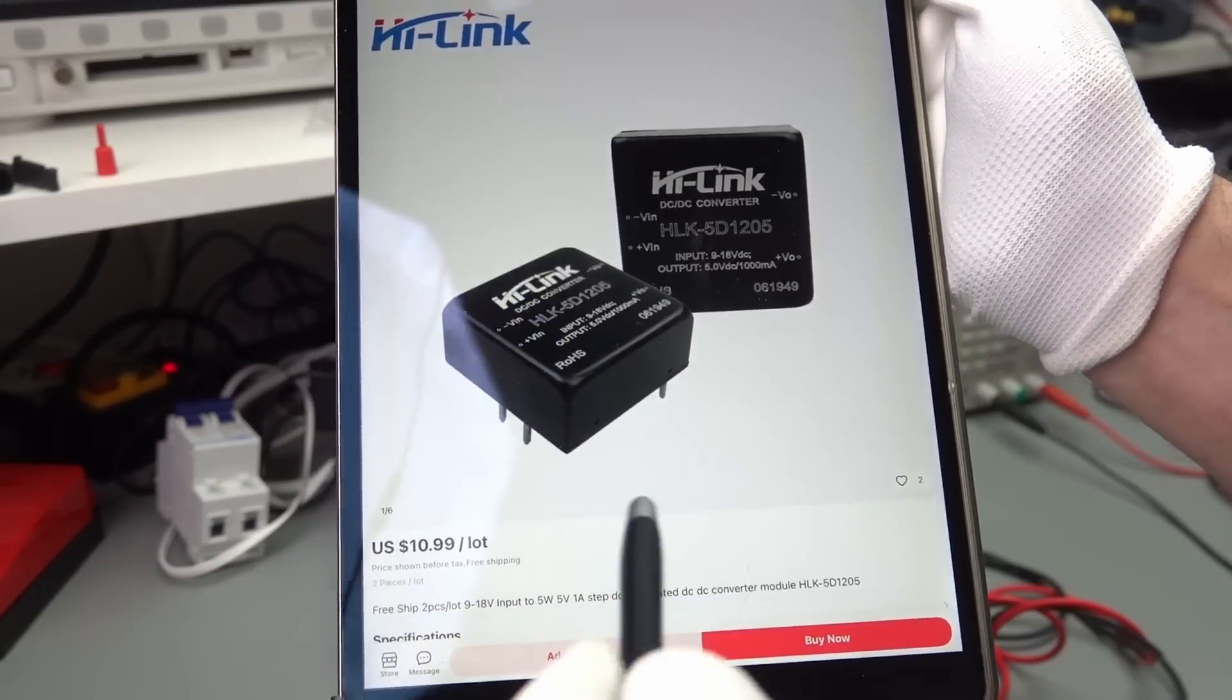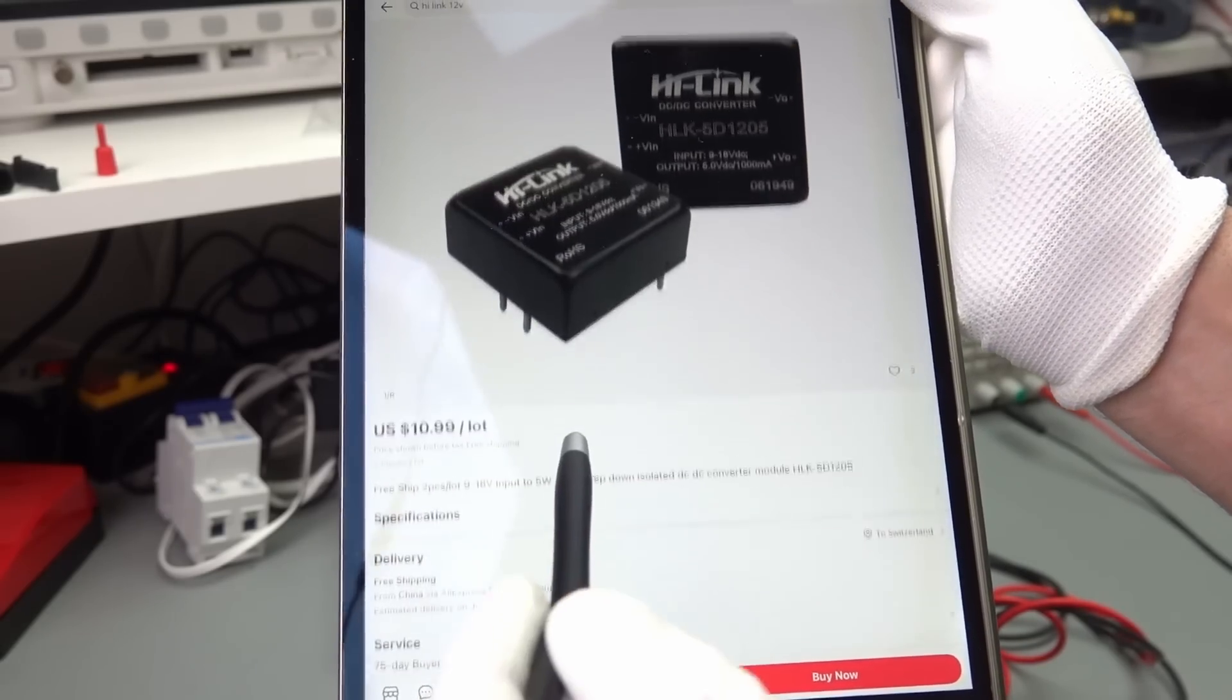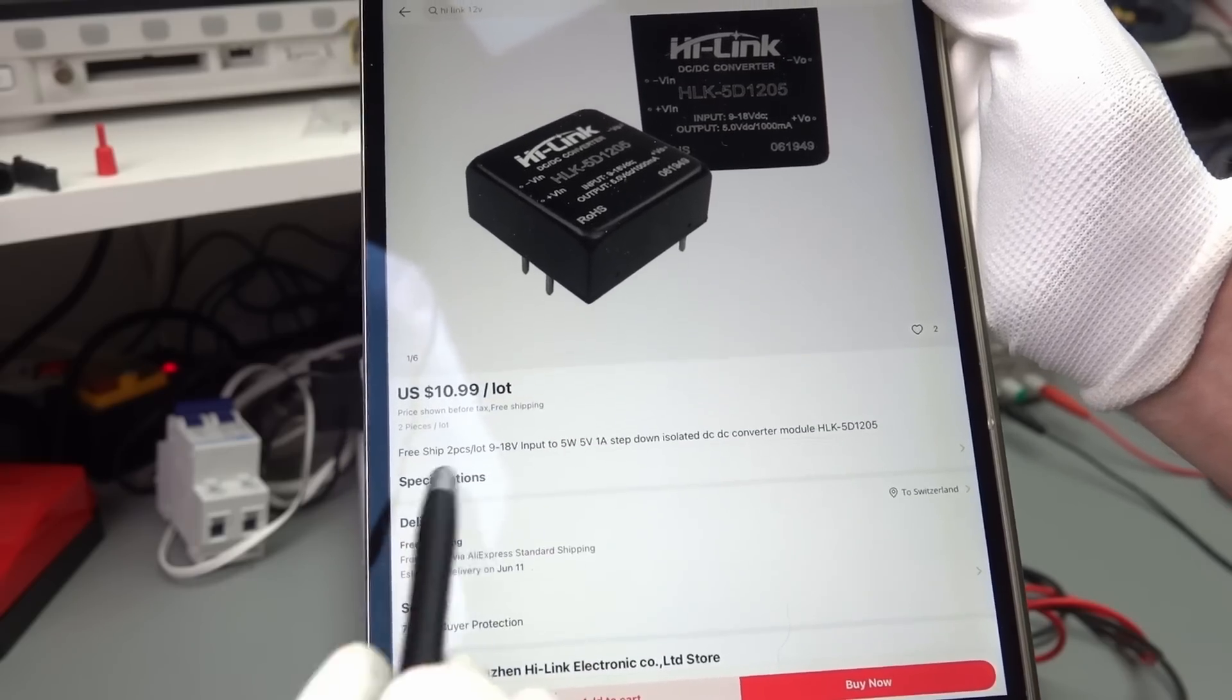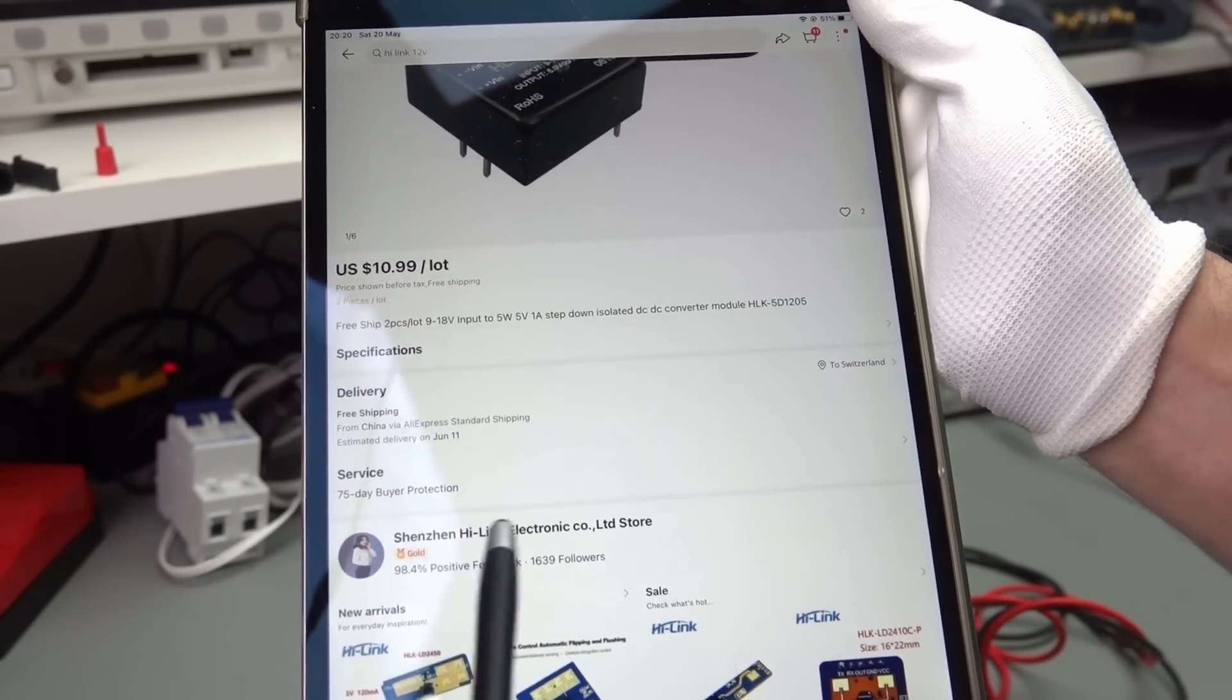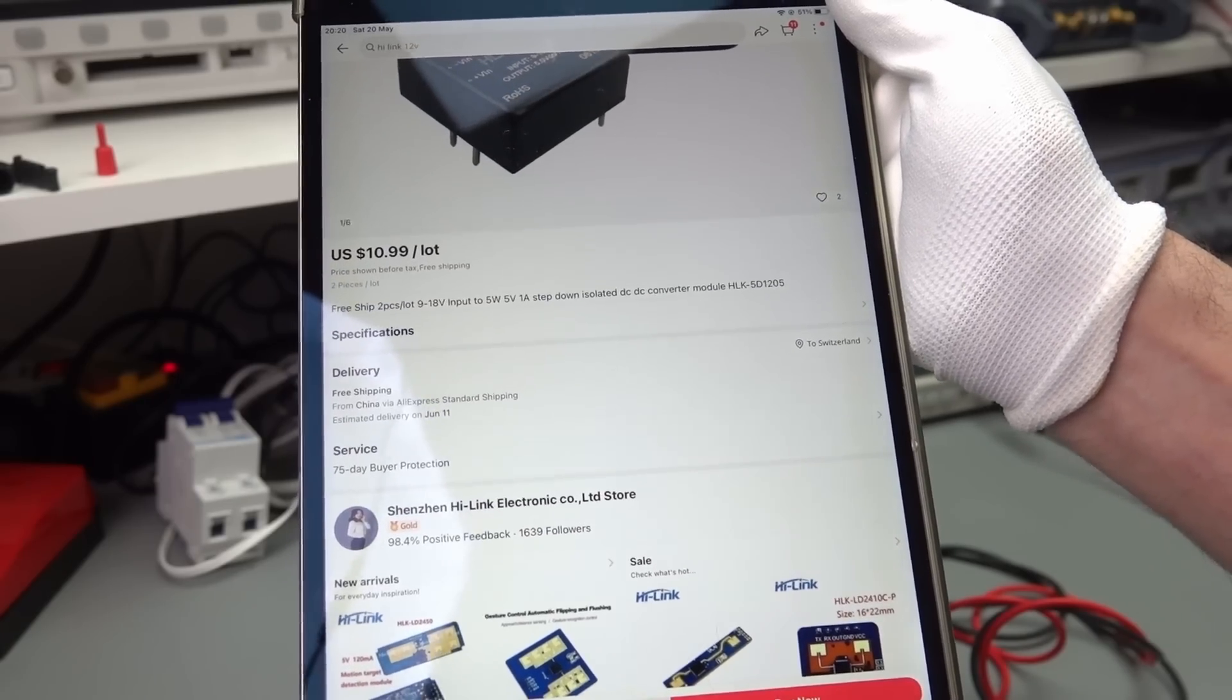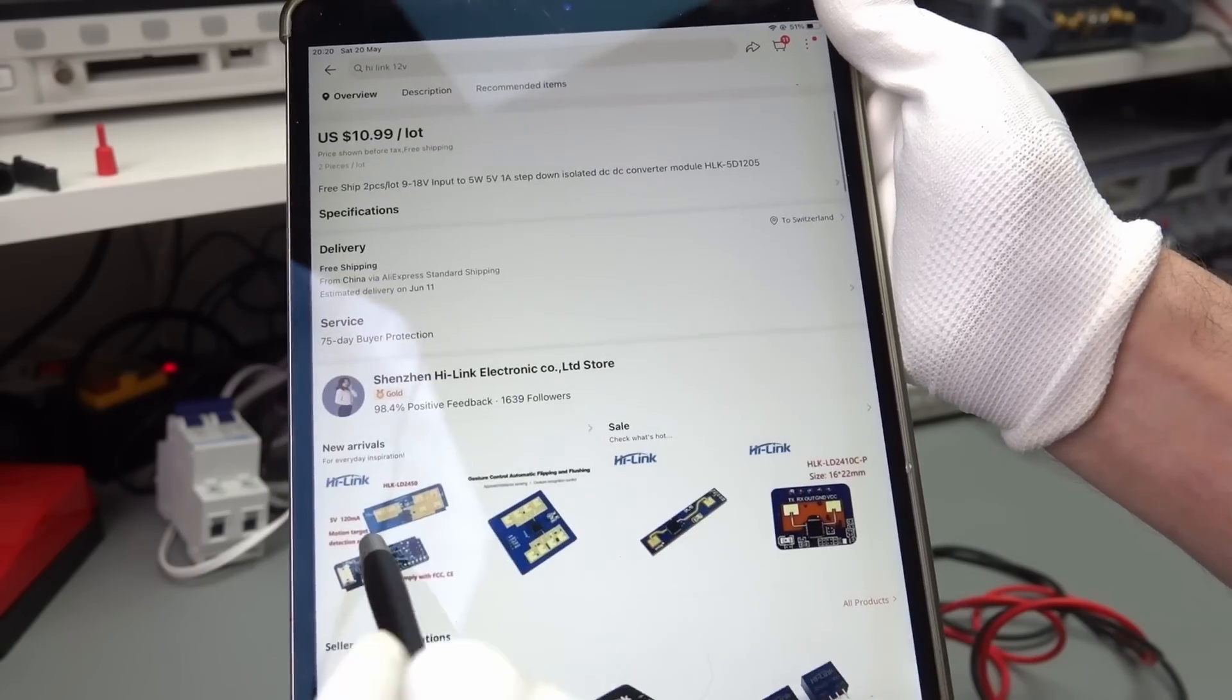Here is the listing. It costs $11 for two pieces. And it is free shipping. And by the way, Shenzhen Highlink Electronic, we know, because they do also produce these 24 GHz radar sensors we had in one of our videos. We see it here.